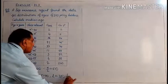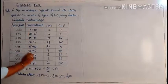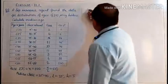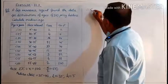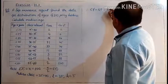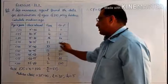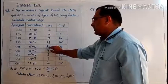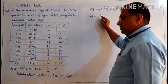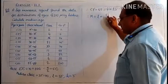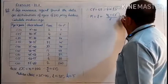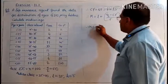Therefore the median class is 35 to 40, and the lower limit L = 35. The class width h = 5 (the difference between consecutive boundary points). The cumulative frequency of the class previous to the median class is CF = 45, and the frequency of the median class is f = 33.